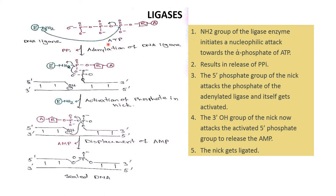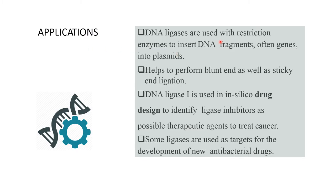The NH2 group of the ligase enzyme initiates a nucleophilic attack towards the alpha phosphate of ATP, resulting in PPi — that is, adenylation — and DNA ligation takes place. Then the 5' phosphate group of the nick attacks the phosphate of the adenylated ligase and itself gets activated. The 3' OH group of the nick then attacks the activated 5' phosphate group to release AMP, and the nick gets ligated.